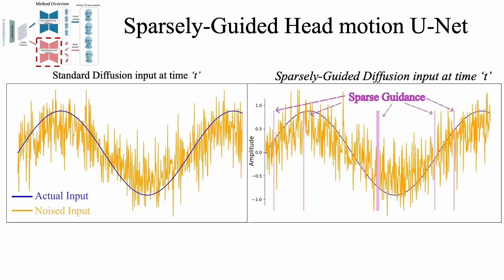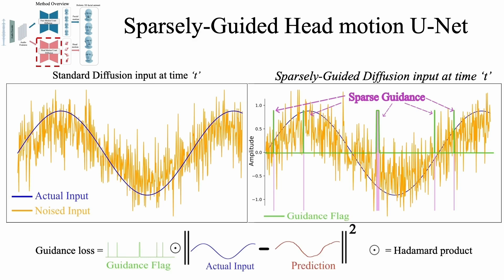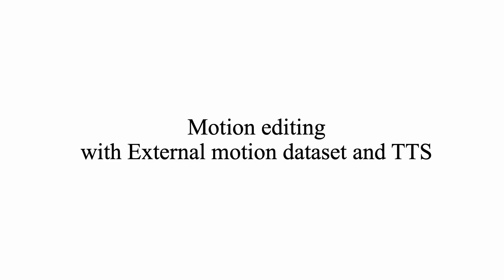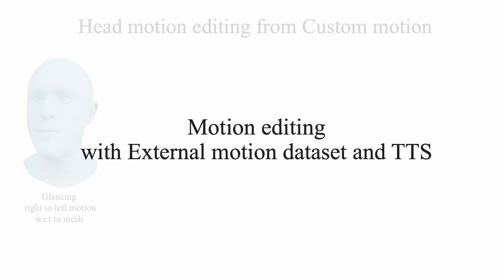This model is also capable of adapting to the speaking style of any actor with less than one minute of training data. To tackle the sparse signal neglect issue, we introduce a novel sparsely guided diffusion. First, we replace part of the noisy input with ground-truth signal as guidance. Then, we add a guidance flag to indicate the relative importance of the sequence. Finally, we introduce a guidance loss to enforce the model to perfectly reproduce the ground-truth signal. Using our proposed method, we show impressive diverse synthesis, editing, part generation, and keyframing. Users can also use motion that was not part of our training distribution to precisely control and guide motion generation.